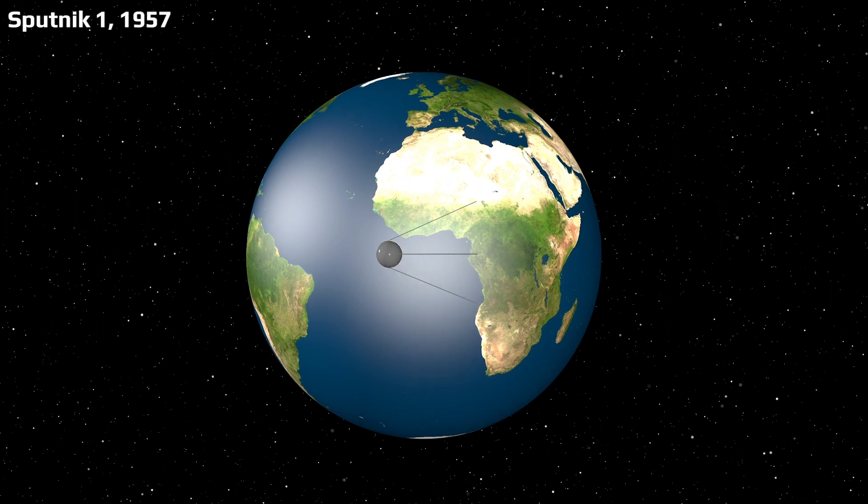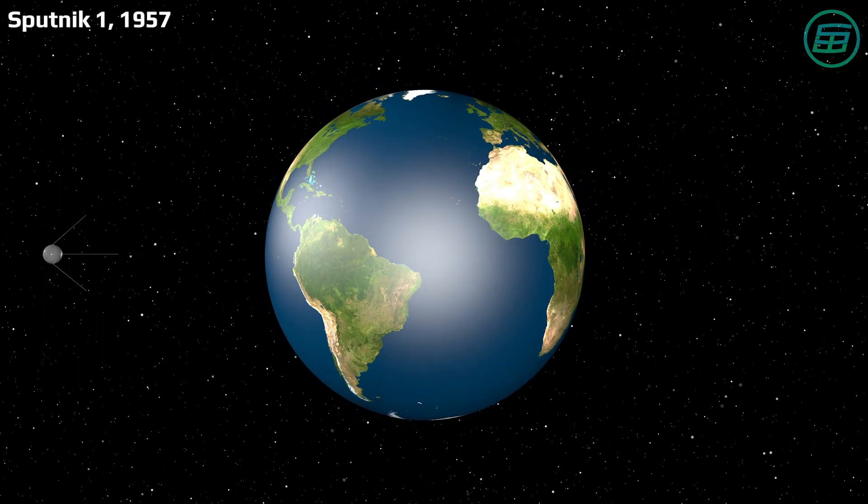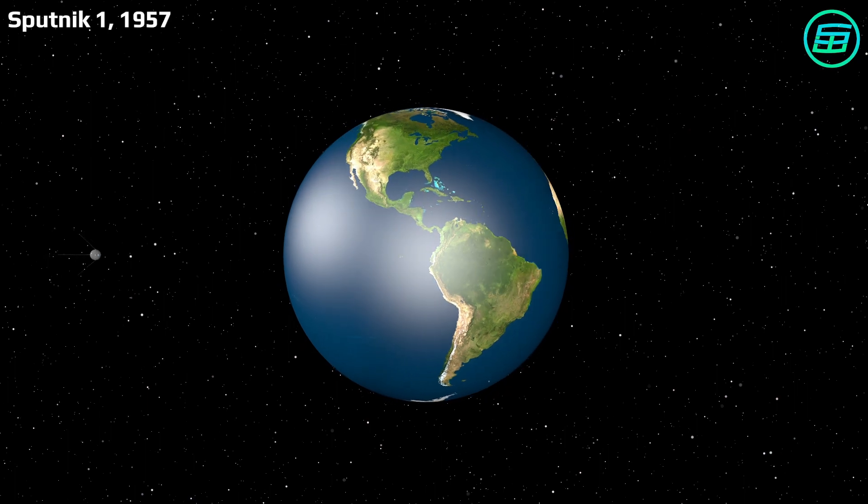In 1957, the Soviet Union launched the world's first satellite, Sputnik 1, into Earth orbit.